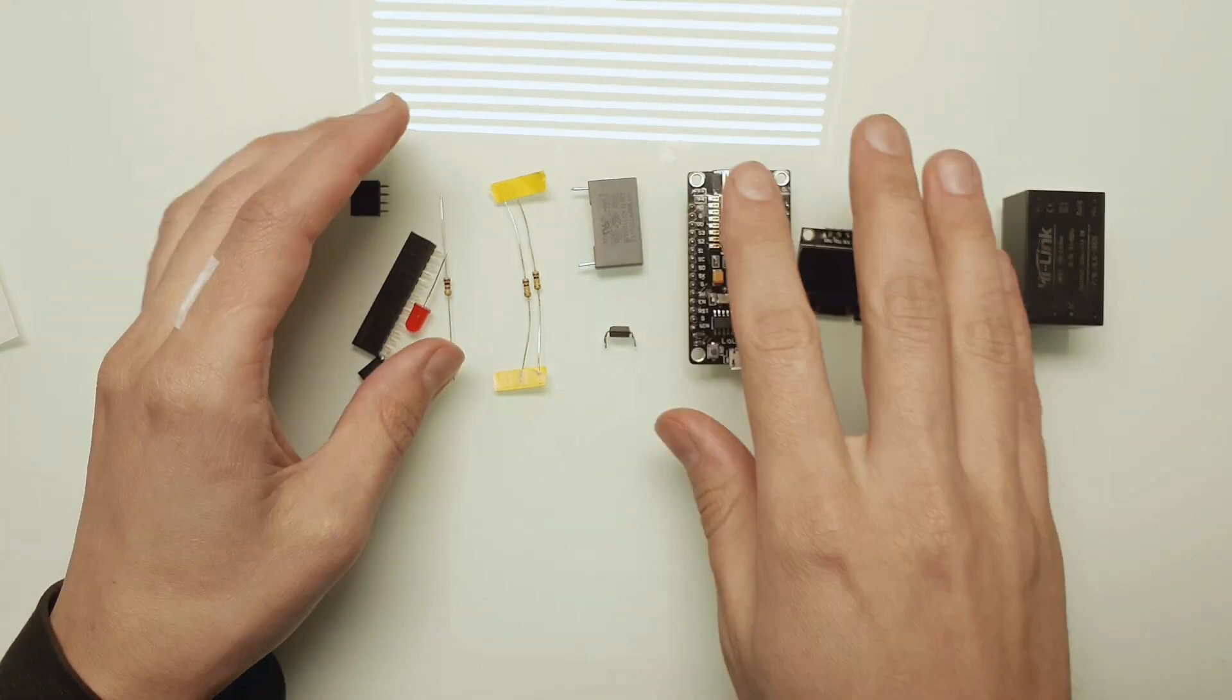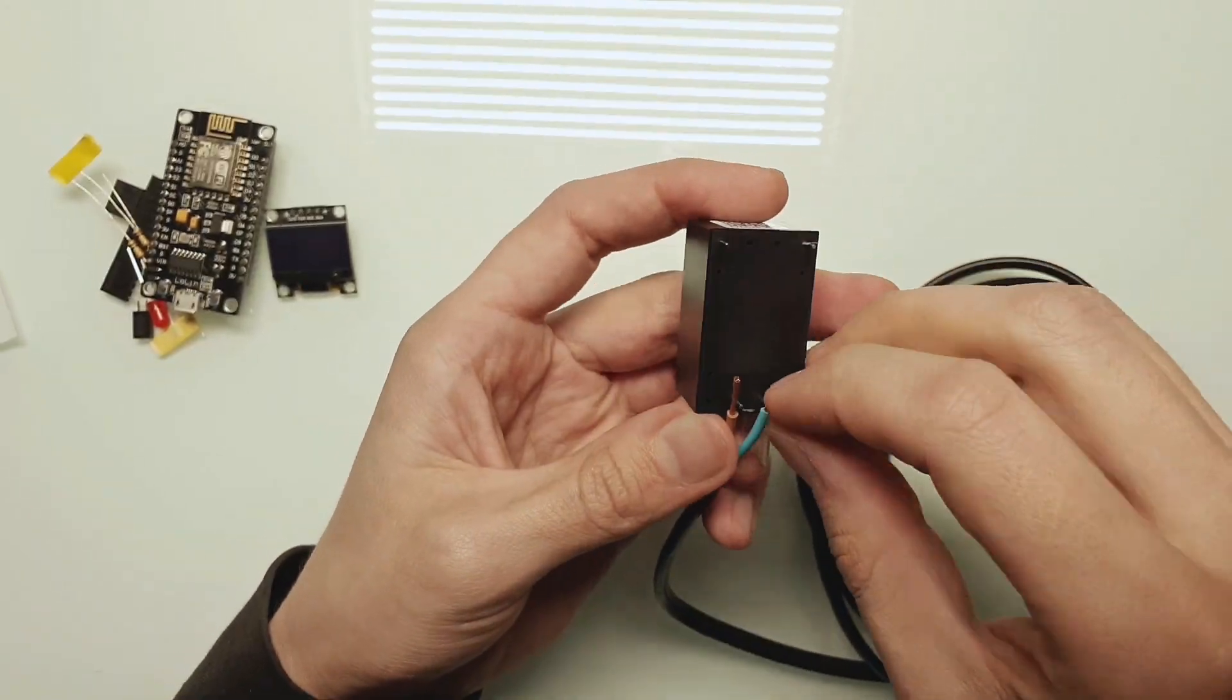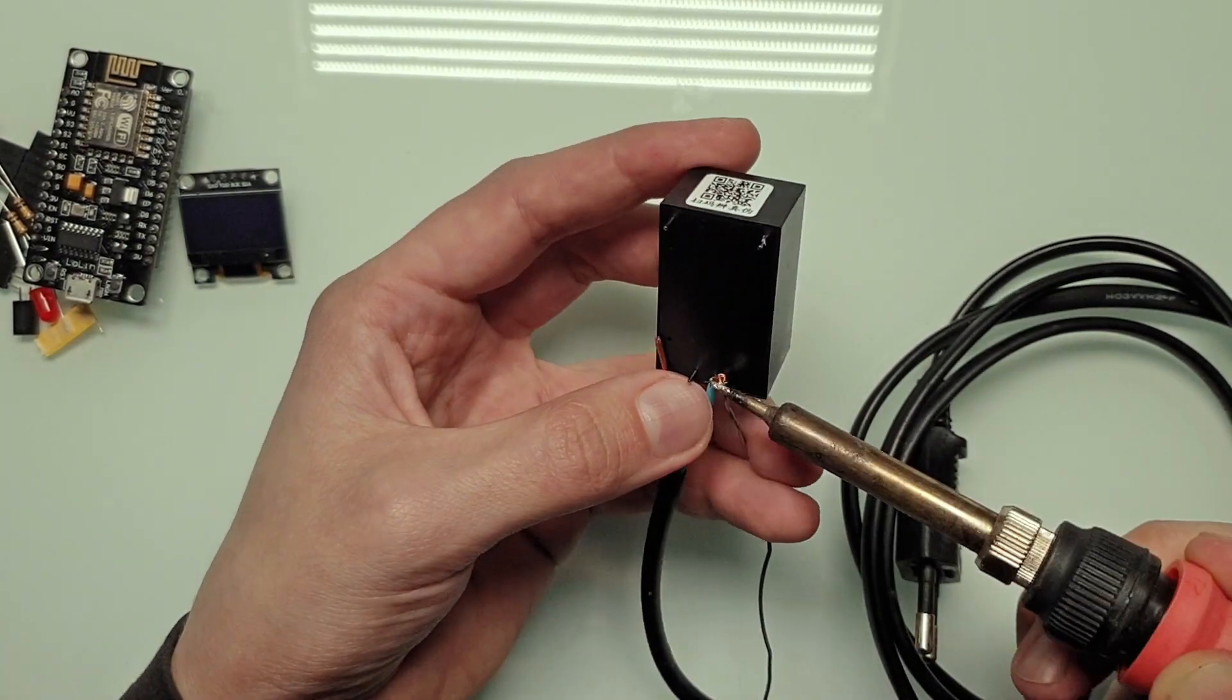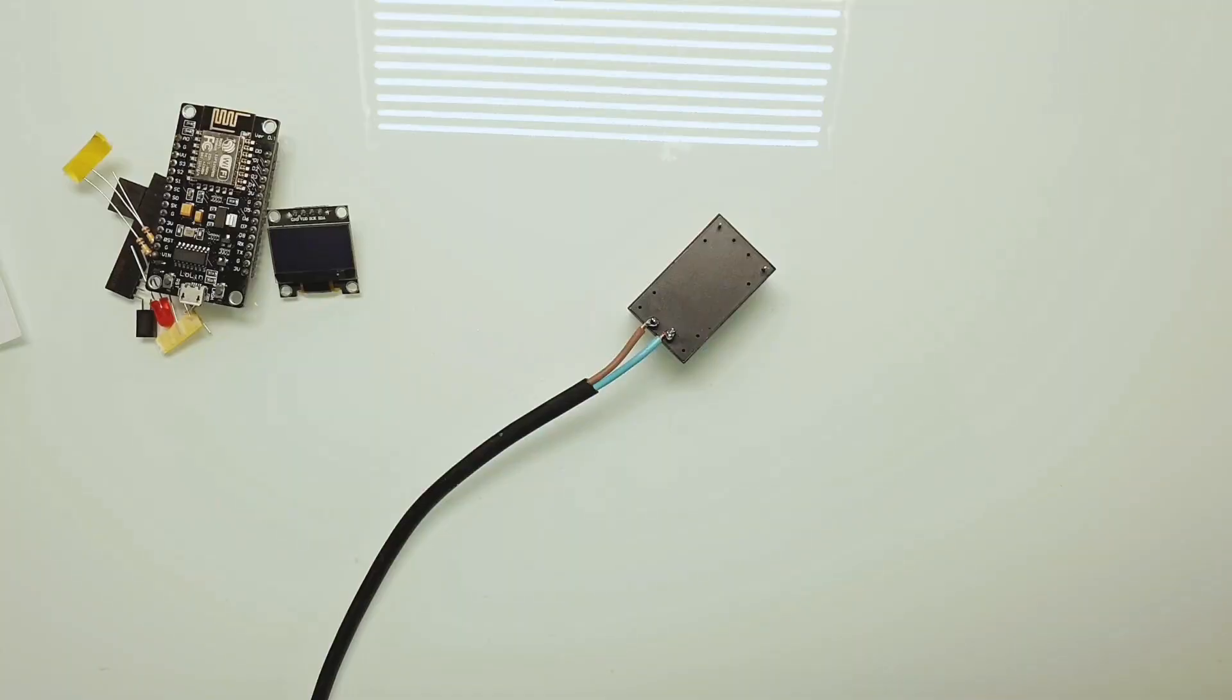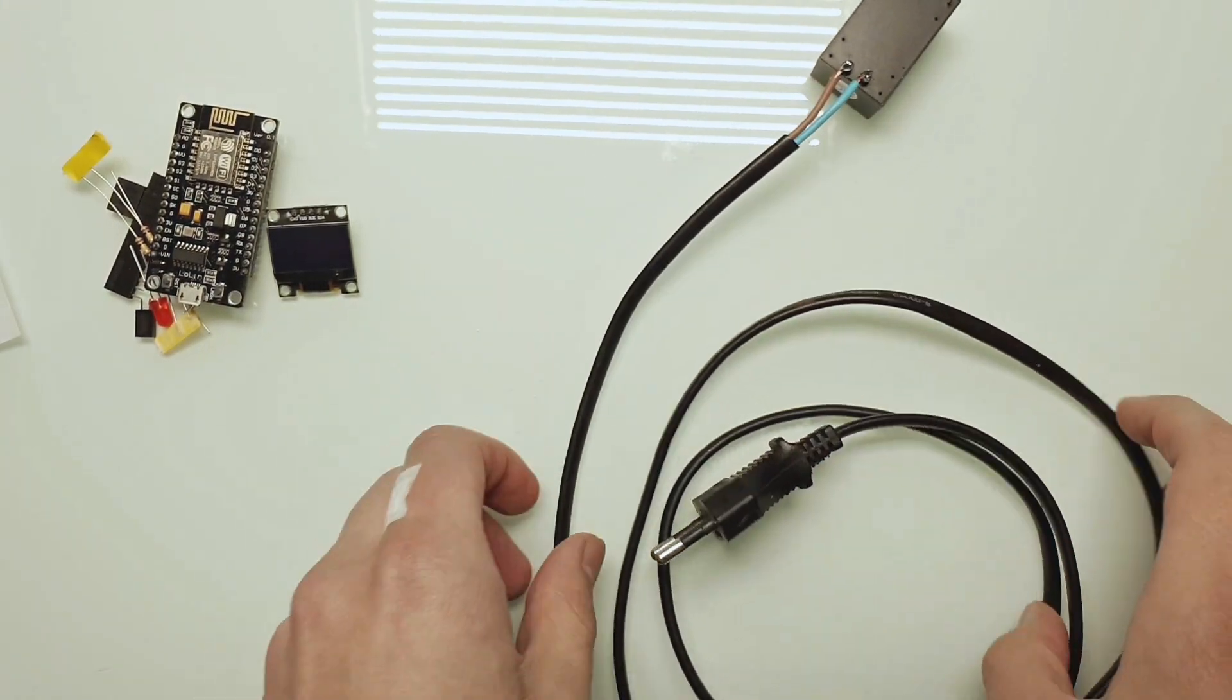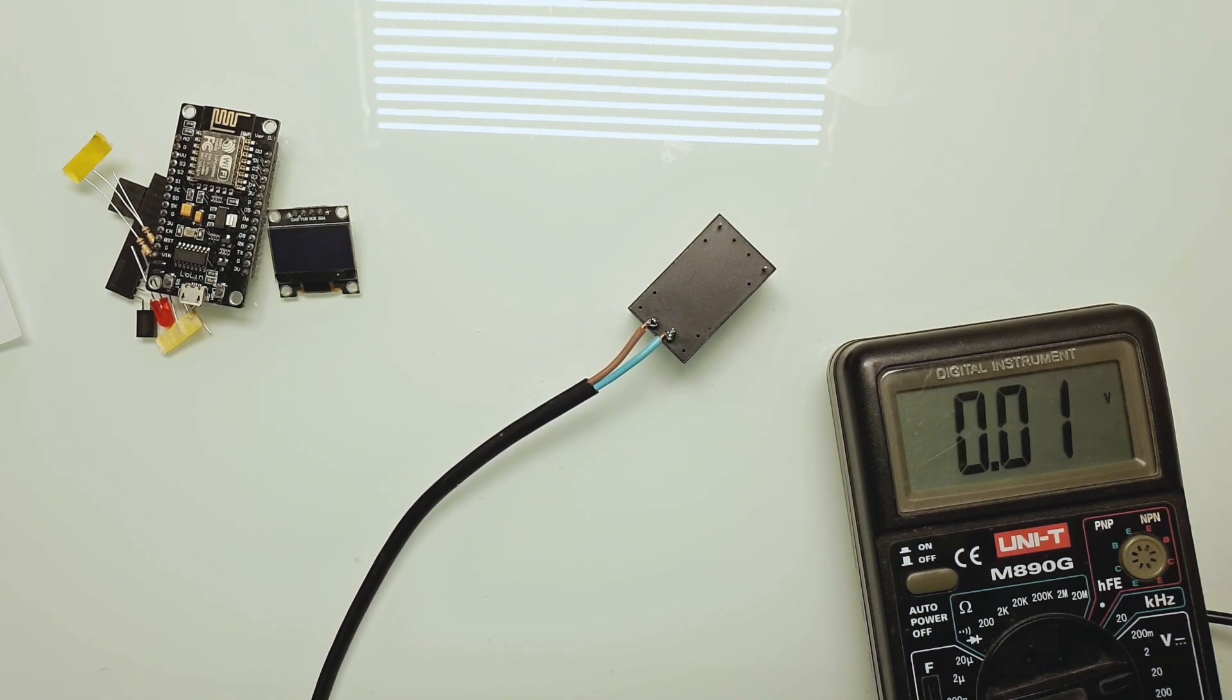Let's do everything step by step. First, we need to provide the power for the brain of the whole project. The brain of this project is the ESP8266 board. Its job is to measure the power grid frequency and send this data via Wi-Fi to the internet. The board needs 5V to operate, so this small power supply should be perfect here. After this simple step is complete, let's check it. We have 5V. Perfect. Let's continue.